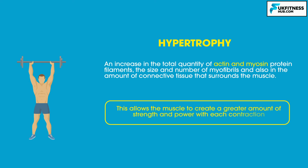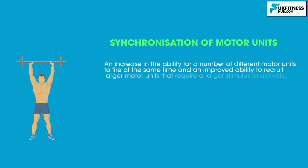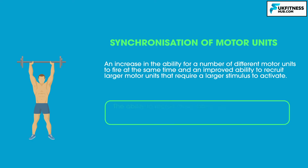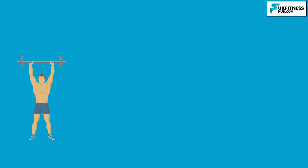This allows the muscle to create a greater amount of strength and power with each contraction. The bodybuilder would have an increased synchronization of motor units, meaning an increase in the ability for a number of different motor units to fire at the same time and an improved ability to recruit larger motor units that require a larger stimulus to activate. The ability to recruit more motor units simultaneously and stimulate larger motor units creates a more powerful muscular contraction. The bodybuilder would also have an increase in the firing rate of motor units.